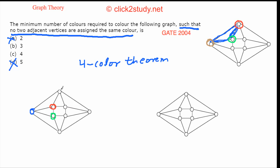I'll try to avoid using more than three colors and see if I can color the rest with only these three. For the next cycle, blue is here and red is here, so I color it green. Then I try red here since I cannot use green or blue. And out here I cannot use green or red, so I have to use blue.